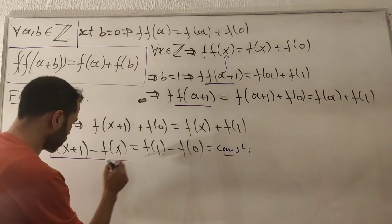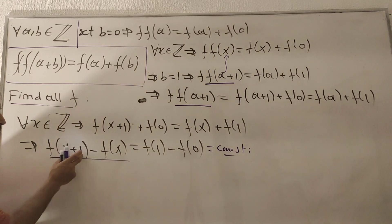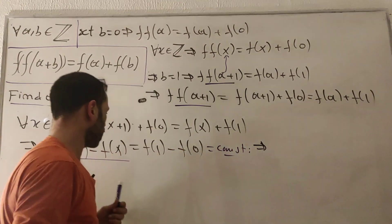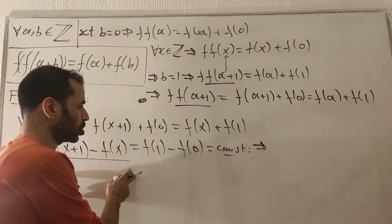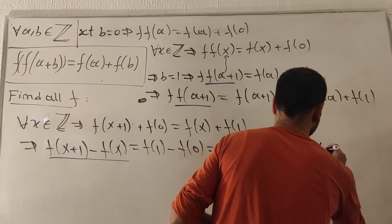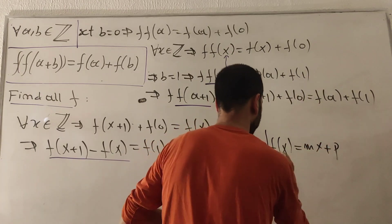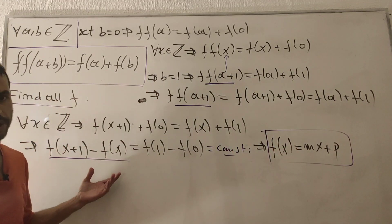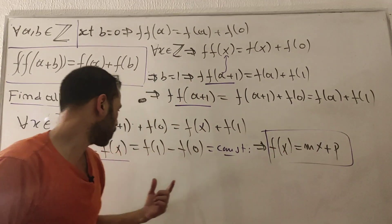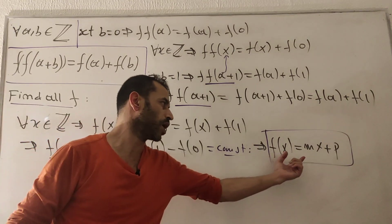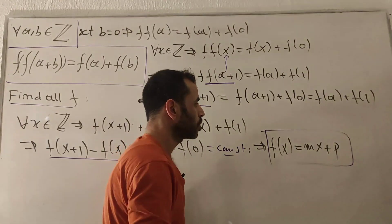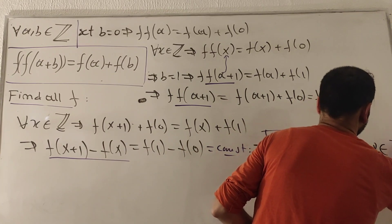Since f(x+1) - f(x) equals a constant, f must be a linear function. This means f(x) = mx + p, where m and p are integers. We can verify this by checking the difference is constant.